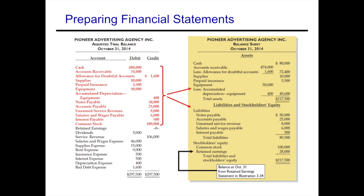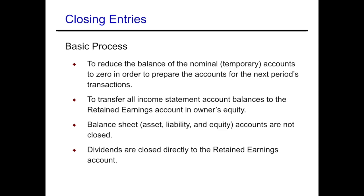Once we've prepared our financial statements, we need to get our books ready for the next period by creating closing entries. The basic process is to reduce the balance of the temporary or nominal accounts to zero, preparing them for the next period's transactions. All income statement account balances are transferred to retained earnings. Balance sheet accounts — assets, liabilities, and equity — are not closed, as those are permanent accounts. Dividends are closed directly to retained earnings.